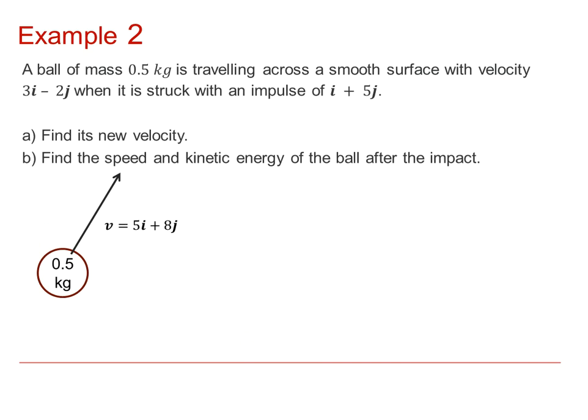To calculate the speed, then that would again be given by Pythagoras' theorem. That's the square root of 5 squared plus 8 squared, which gives us the square root of 89 meters per second. And the kinetic energy equals half mv squared, so that's a half multiplied by 0.5 multiplied by 89. And that turns out to be 22.25 joules.